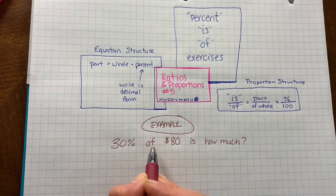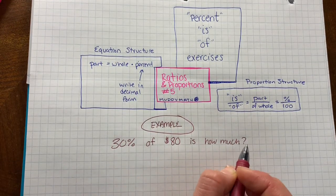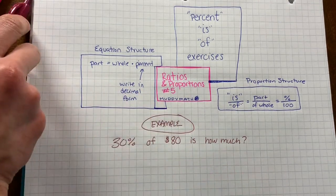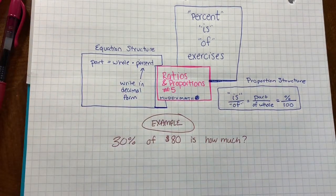Let's look at an example: 30% of $80 is how much. First, let's use the equation. We need to identify the part, the whole, and the percent.